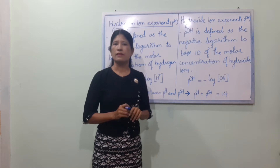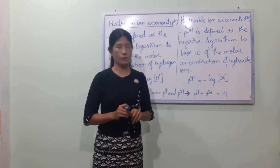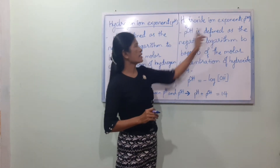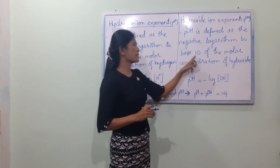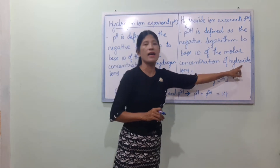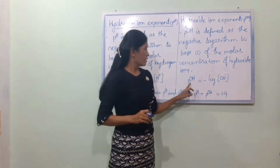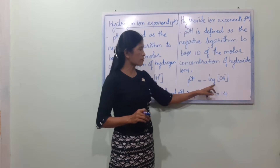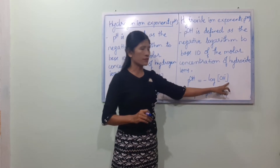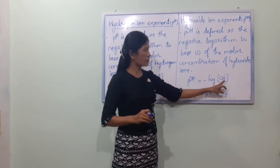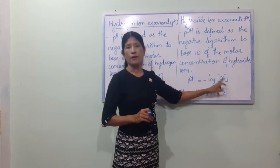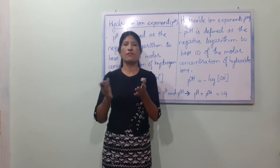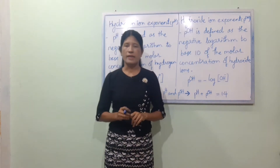Hydrogen ion exponent. pOH is defined as the negative logarithm to base 10 of the molar concentration of hydroxide ion. pOH is equal to minus log of the molar concentration of the hydroxide ion OH⁻.